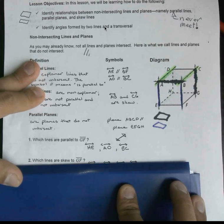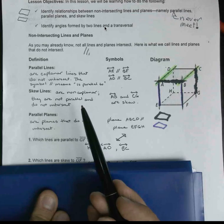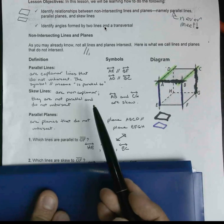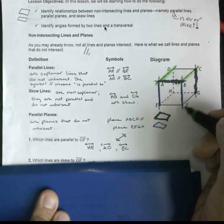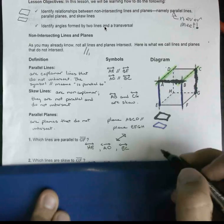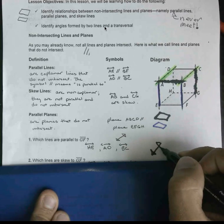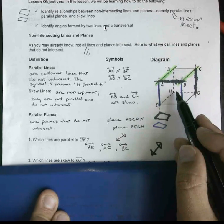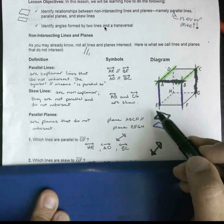Which lines are skewed to GF? Recall that with skewed lines, these are not on the same plane, they're not parallel, they don't intersect. I know that GF is here, so it's still that same line going like that. I don't want to use EF or HG because those are parallel.